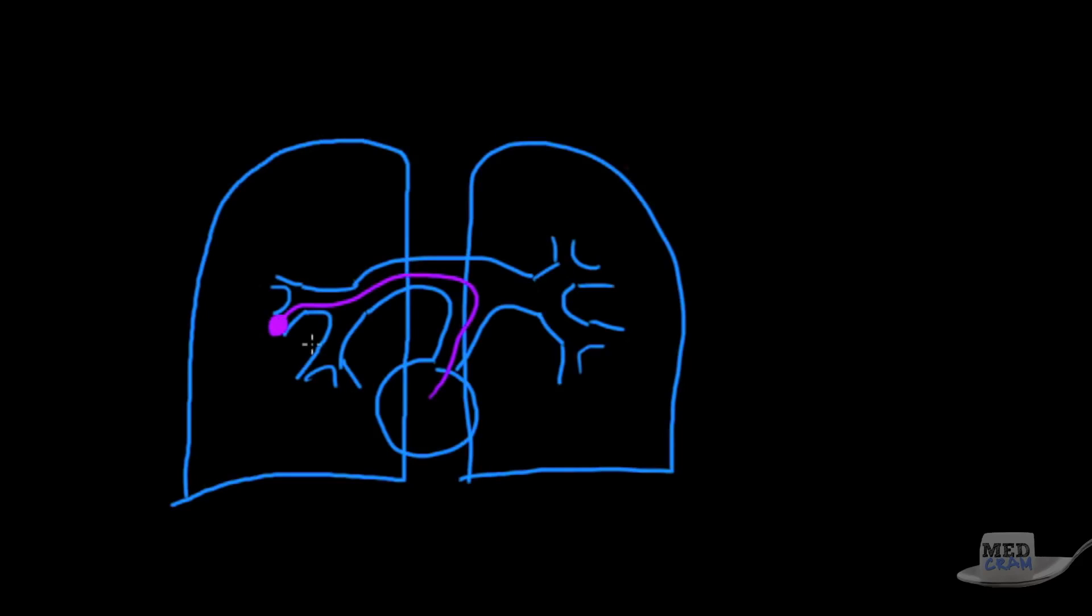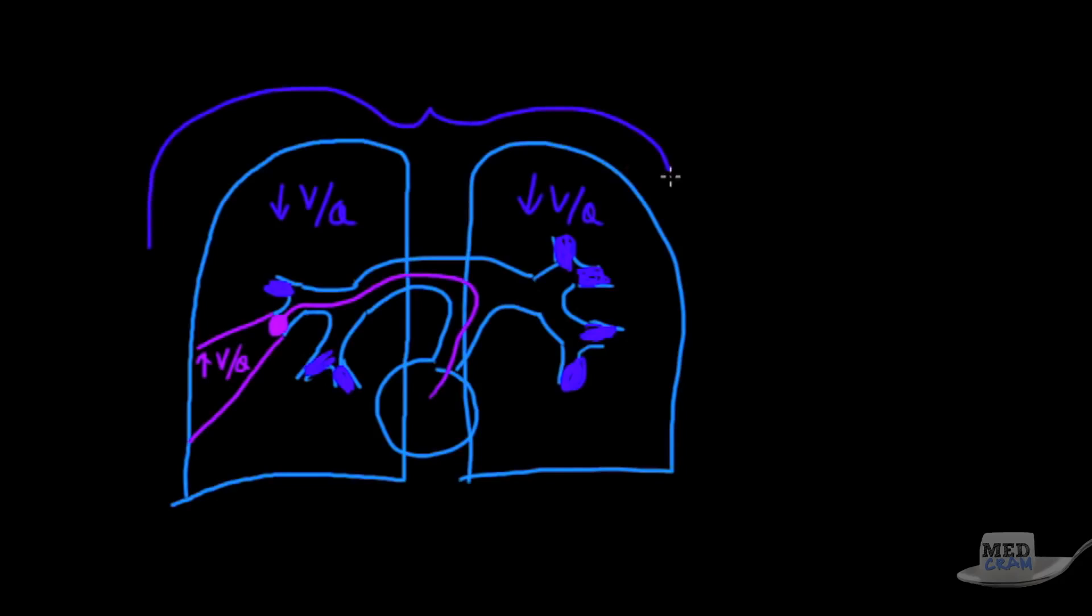When you get a clot that forms, the clot blood gets pumped in and goes over to a specific area and lodges. What happens at that point is that there is no more perfusion to this segment of the lung. As a result of that, if there is no perfusion, you're going to have an area of high VQ because there's very low perfusion. The blood that would normally go to this area—what happens to it? It's got to go everywhere else. So perfusion increases there, it increases here, it increases everywhere. In other words, everywhere else you get an area of low VQ in comparison to this area. As a result of this, the whole situation is that you get low oxygen in the blood.